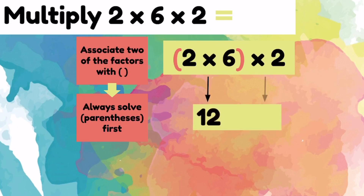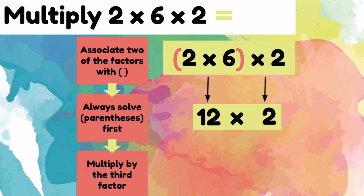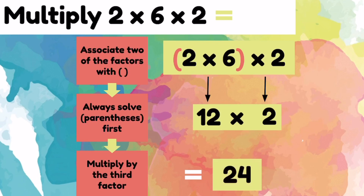Let's bring down the times 2. The last step is to multiply by the third factor, which was the 2, so let's multiply 12 times 2. 12 times 2 equals 24, so we know that 2 times 6 times 2 equals 24.